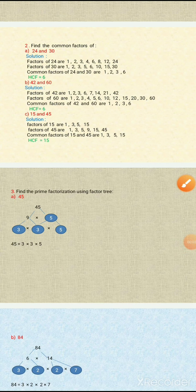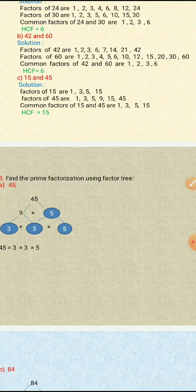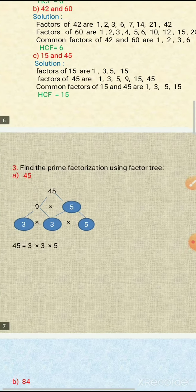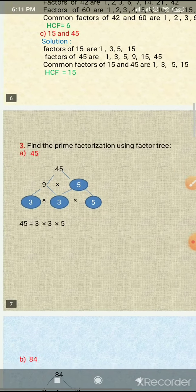Now we will solve question number 3: find the prime factorization using a factor tree. The first example is 45.